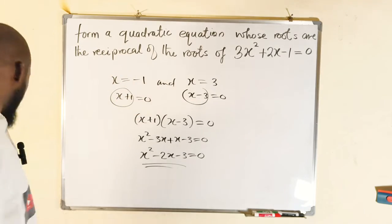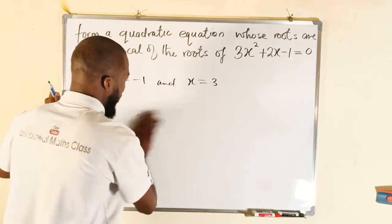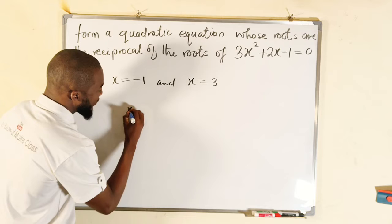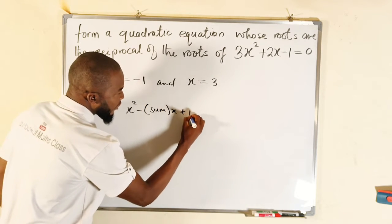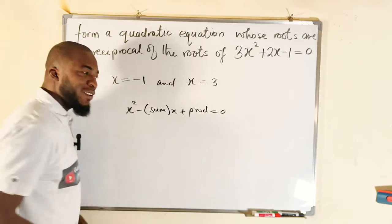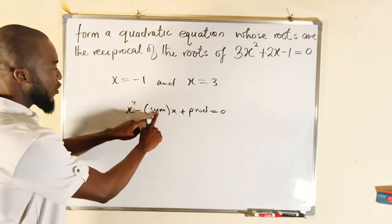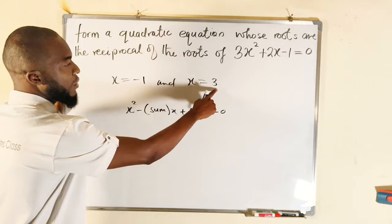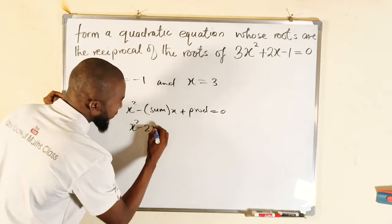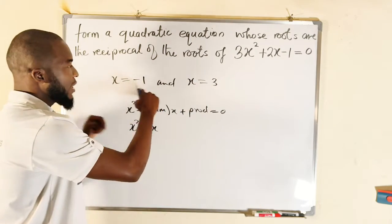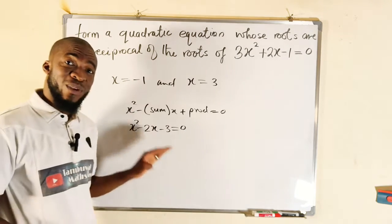Another way to form this quadratic equation — and I think the simplest way — is to use the formula: x squared minus (sum of the roots) times x, plus their product, equal to 0. The sum meaning you add the roots: negative 1 plus 3 gives 2. So we have x squared minus 2 times x. The product meaning you multiply them: negative 1 times 3 is negative 3. Then set everything equal to 0. As simple as that.